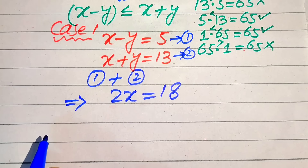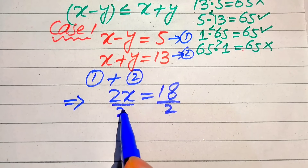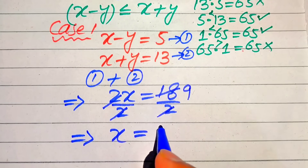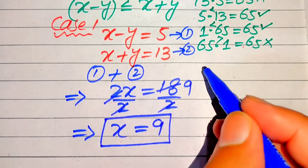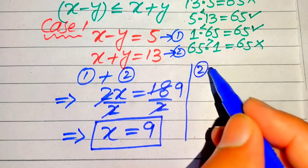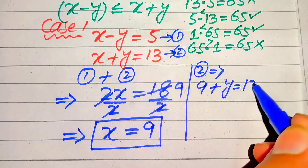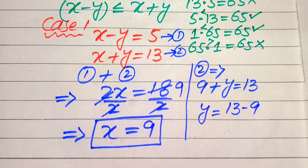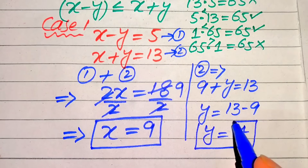We divide both sides by 2 to get x equals 9. Now we substitute x equals 9 into equation 2: 9 plus y equals 13, so y equals 13 minus 9, which gives us y equals 4.